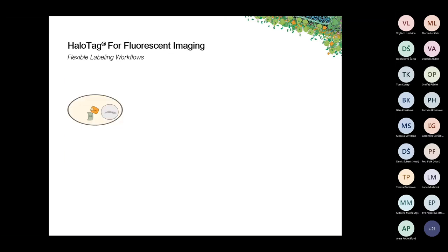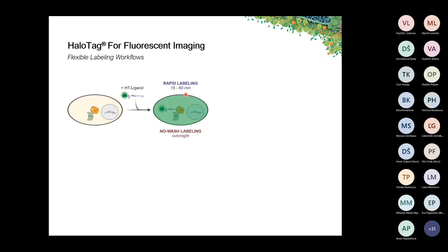Let's look at the workflow for fluorescently labeling a HaloTag protein within the cell. The first step is expressing your protein of interest as a HaloTag fusion. The actual first step of the labeling process is the addition of one of the fluorescent HaloTag ligands, followed by incubation — for the rapid labeling ligands, this is 15 to 60 minutes; for the no-wash labeling ligands, this is an overnight incubation. You can then proceed, or if running a pulse-chase experiment, add a second fluorescent HaloTag ligand followed by the respective incubation time.